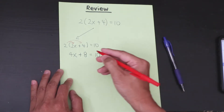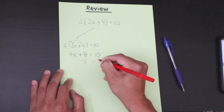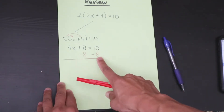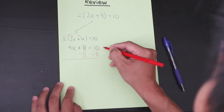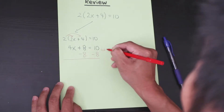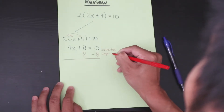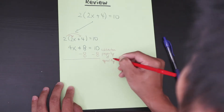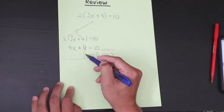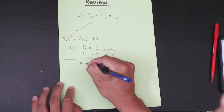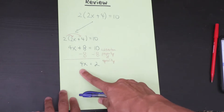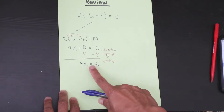Then it becomes a two-step equation. You subtract 8 on both sides — that's the subtraction property of equality. Positive 8 and negative 8 cancel, so you're left with 4x on the left. And 10 minus 8 is 2, so the next line is 4x equals 2.